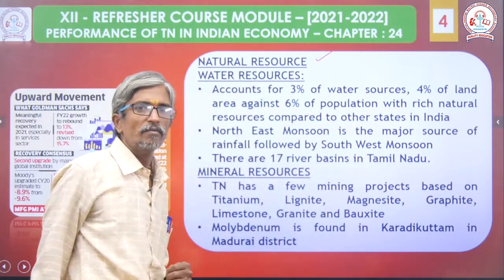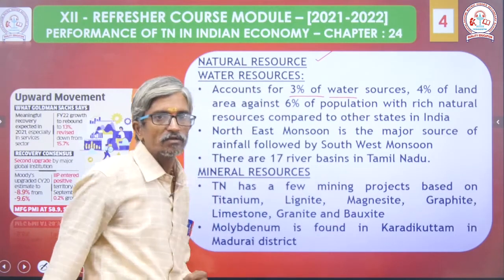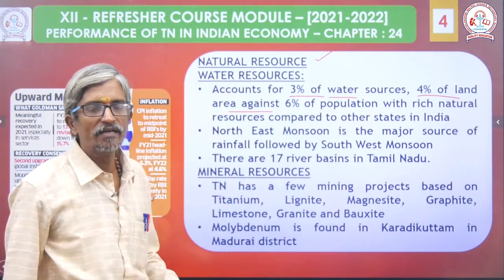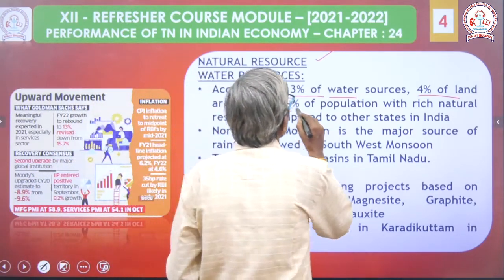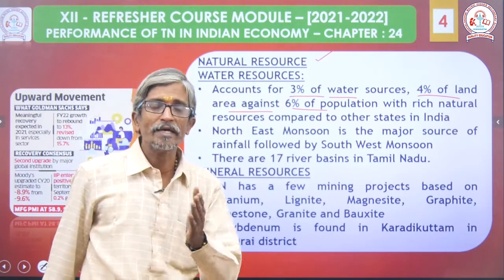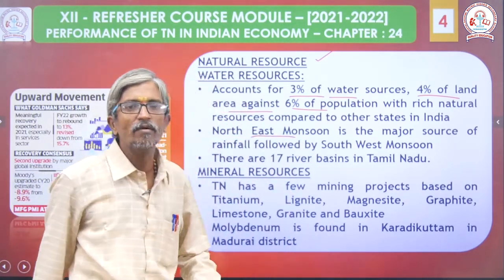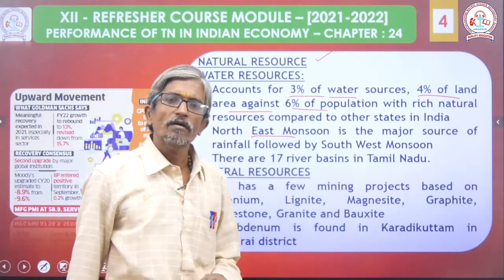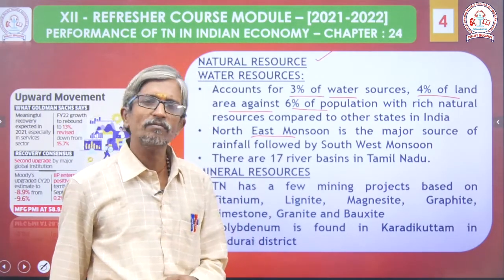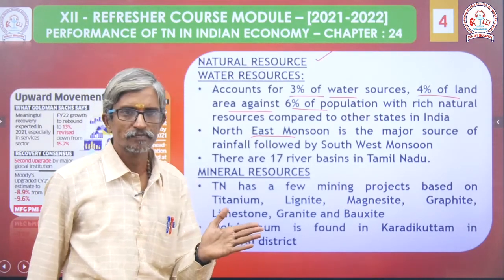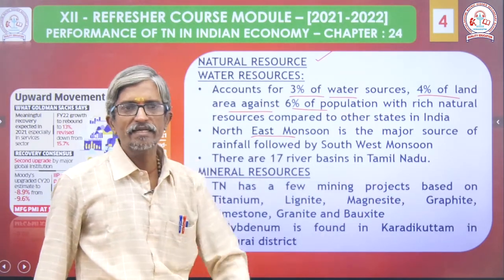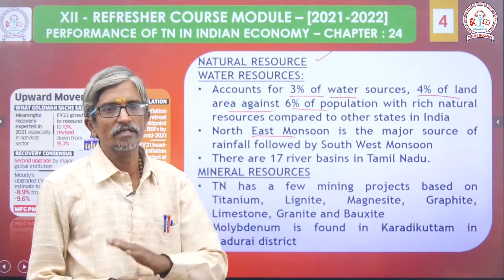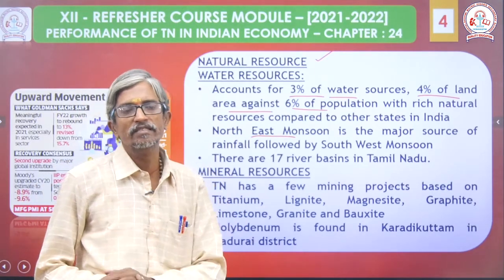That is number one — water resources. Tamilnadu has only 3% of water sources against 4% of land area and 6% of population. That is a great variation. Northeast monsoon is a major source, but we get limited rainfall from it. India has two monsoons — Southwest and Northeast. During the months of October, November and December, South Indian states are the most beneficiary states. Tamilnadu has 17 major rivers.